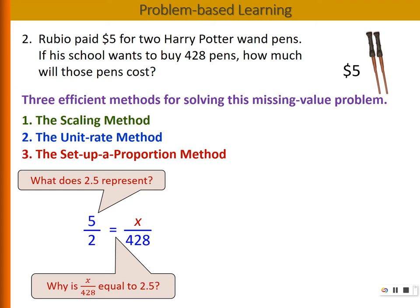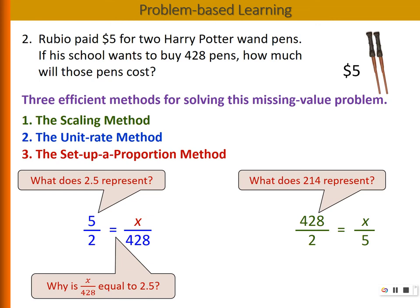Now, we can also set up the proportion using number of pens divided by number of pens equals number of dollars divided by number of dollars. Take a look. 428 divided by 2 is 214. And then we have to ask, why should the second factor x over 5 also be equal to 214?